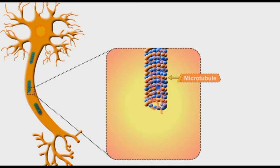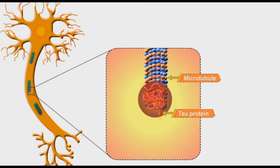In healthy neurons, there is a natural protein called tau protein which maintains the integrity of cellular microtubules.